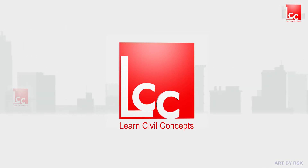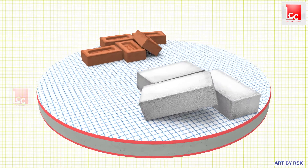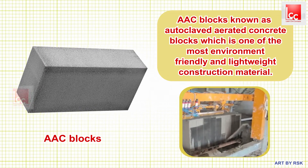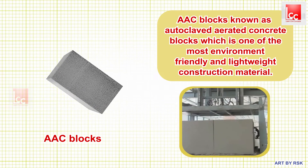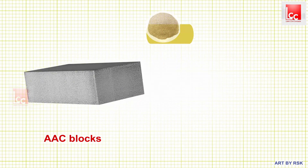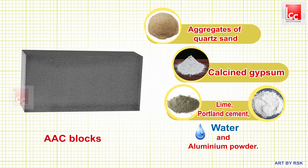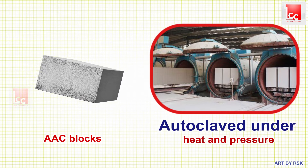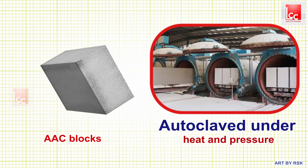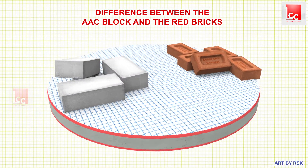In this video we will learn about the AAC block and the difference between the AAC block and the red bricks. AAC block, also known as autoclaved aerated concrete blocks, is one of the most environment-friendly and lightweight construction materials. It is a sustainable construction material made from the aggregates of quartz, calcium, gypsum, lime, Portland cement, water, and aluminium powder. After mixing and molding, the concrete is autoclaved under heat and pressure, thus gaining distinctive properties: high strength, load-bearing, and thermal insulation.